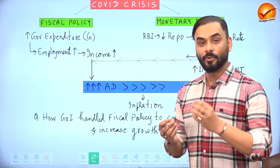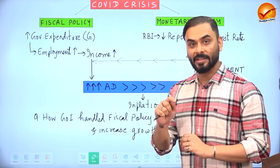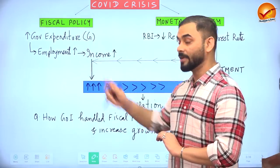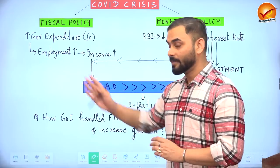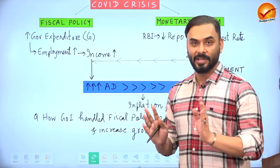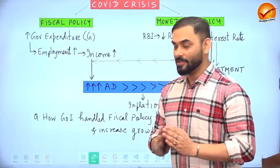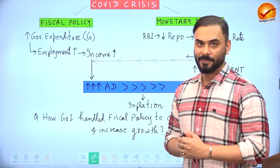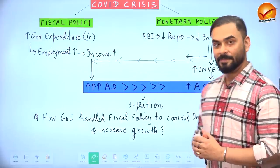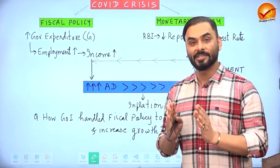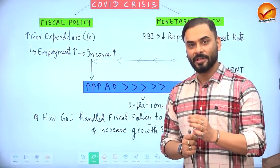When COVID hit the Indian economy, the government first helped vulnerable sections of society by providing food subsidies and medicine. The government also invested more in infrastructure like roads — this is government expenditure. More infrastructure creates employment, raising people's income, which increases demand for goods and services, thus boosting aggregate demand. Meanwhile, the Reserve Bank of India reduced the repo rate — the rate at which commercial banks borrow from RBI — making loans cheaper across the economy.